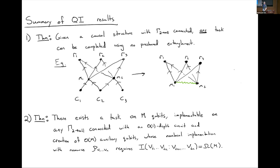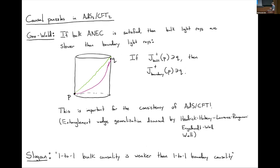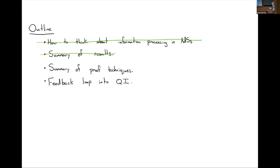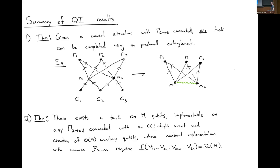We also constructed an analog of the Tomamichel et al. task for the n-to-n case: a task on m qubits, implementable on any connected two-to-all graph with an order-one depth circuit and creation of only order m auxiliary qubits. There exists such a task with all these properties such that any non-local implementation with an n-party resource requires large mutual information across any bipartition of the systems. Making the same kinds of assumptions as in the two-to-two case, this theorem could be used to argue for the n-to-n connected wedge theorem without making reference to gravity — purely from quantum information theory.